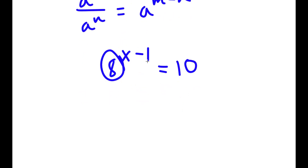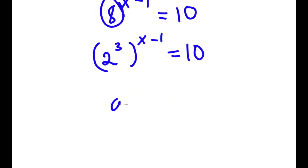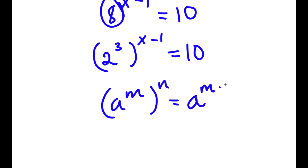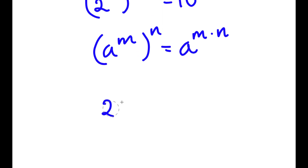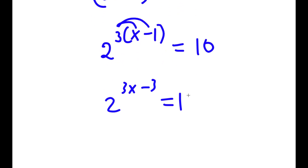Now 8 is the same thing as 2 to the power of 3. So now I have 2 to the power of 3 to the power of x minus 1 is equal to 10. If I have something in the form a to the power of m to the power of n, this is equal to a to the power of m times n. So 2 to the power of 3 to the power of x minus 1 equals 2 to the power of 3 times x minus 1. I can distribute the 3, so I get 2 to the power of 3x minus 3 is equal to 10.